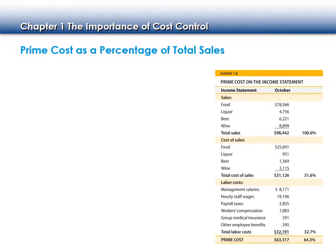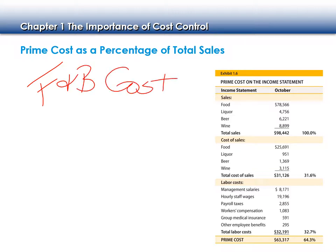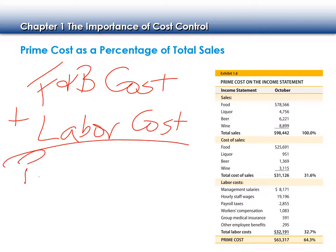Our prime cost is made up of two parts. One is food and beverage cost — F&B, an abbreviation you're going to see a lot in our industry. The other part is labor cost. We add those two things together and we get our prime cost.